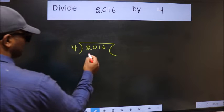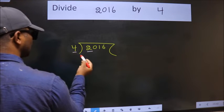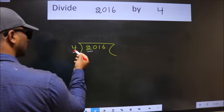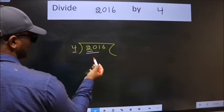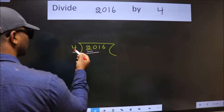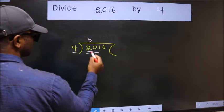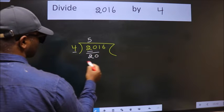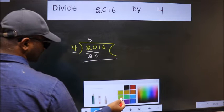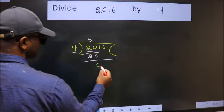Here we have 2. Here 4. 2 is smaller than 4, so we should take 2 numbers: 20. When do we get 20 in the 4 table? 4 times 5 is 20. Now we should subtract. We get 0.